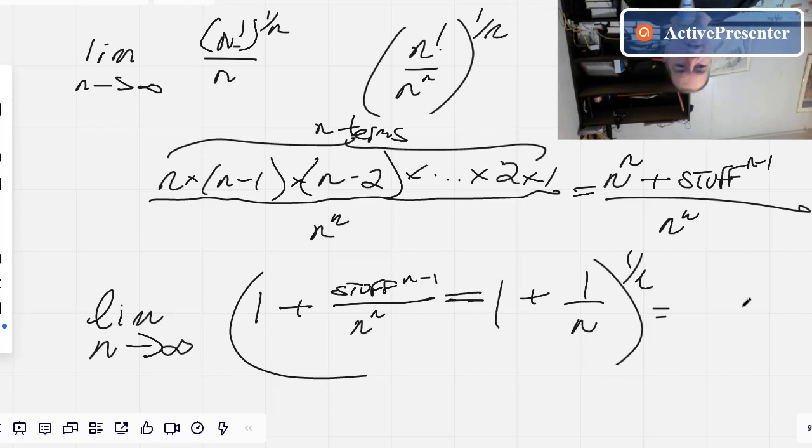the limit as n goes to infinity of (1 plus 1 over n) all to the power of n, which equals 1 over e.